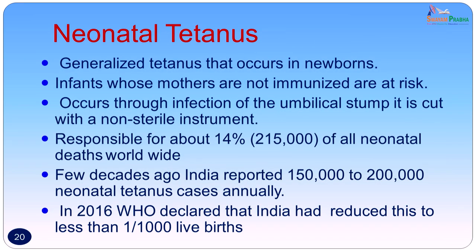Neonatal tetanus: generalized tetanus also occurs in newborns. Infants whose mothers are not immunized are at risk. It occurs through infection of the umbilical stump — which could be cut with a non-sterile instrument — or because of the practice of applying cow dung onto the umbilical stump. It was responsible for about 14% of all neonatal deaths worldwide. A few decades ago India reported 1.5 to 2 lakh neonatal tetanus cases annually. Due to intensive immunization efforts in pregnant mothers, in 2016 the WHO declared that India had reduced this incidence to less than 1 per 1000 live births — a major achievement.